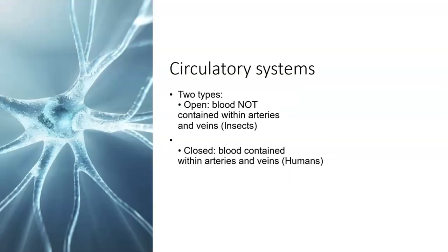Circulatory systems come in two types: open and closed. We have closed circulatory systems, where all blood is enclosed within arteries and veins. Insects have what's called an open system, where their blood bathes their organs instead of just passing through them. I would definitely recommend coming to ACES if you're confused on this, as it's a newer idea for some people. The open system is kind of a proto or older version of the closed circulatory system, so review both.